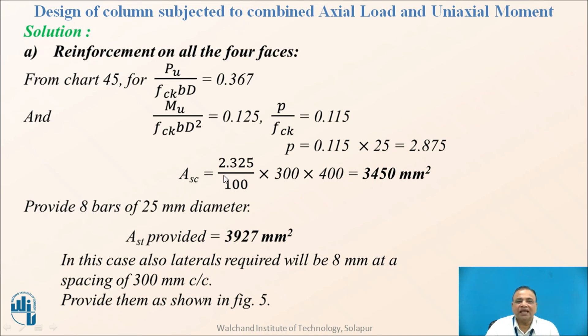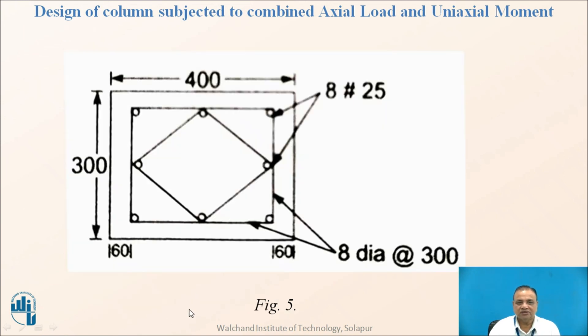ASC based on the percentage steel is P by 100 into this particular area of column that is 300 by 400. It gives us 3450 mm square. Provide 8 bars of 25 mm diameter. ASC provided is 3927 mm square. In this case also lateral ties required are 8 mm diameter spacing again 300 center to center.